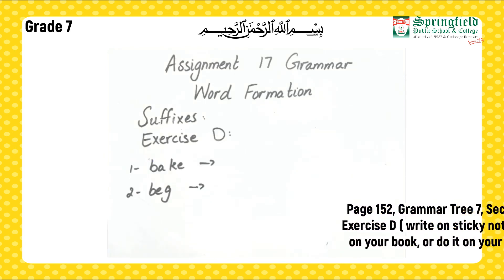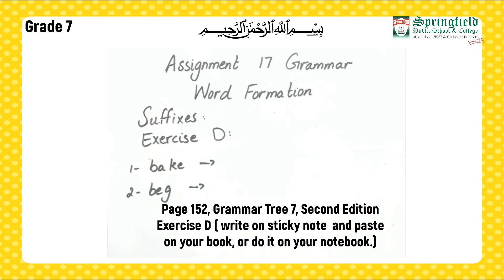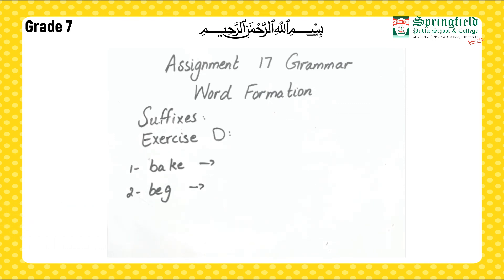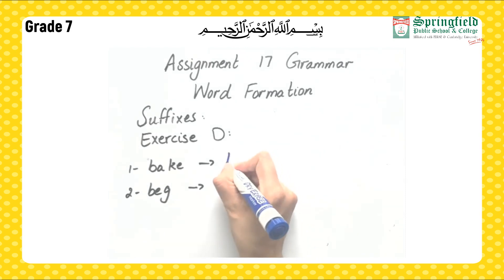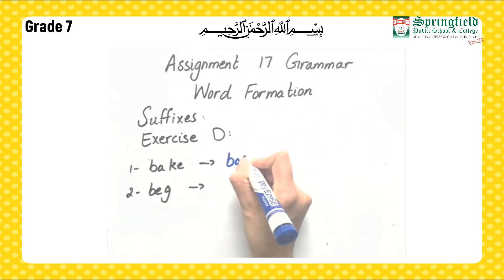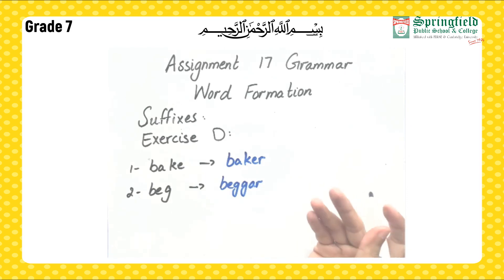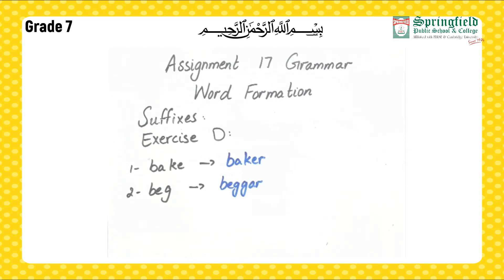Exercise D: use appropriate suffixes from the table above to form nouns. The table is given in your assignment as well as in your book. For example, bake becomes baker and beg becomes beggar. You are going to do the rest in the same way by adding suffixes to the root word to make nouns.